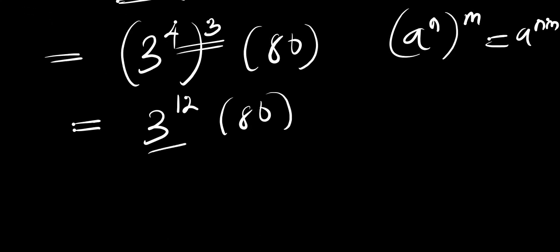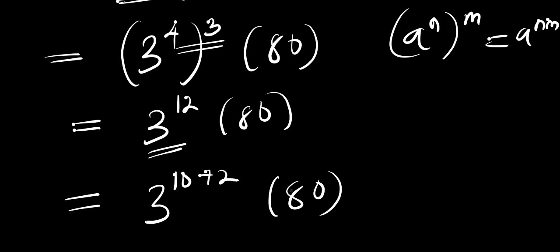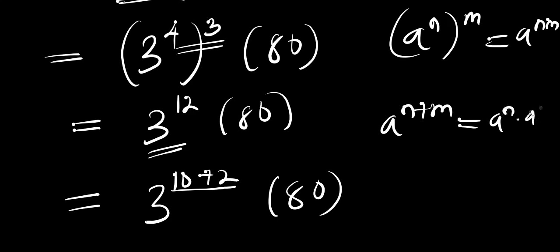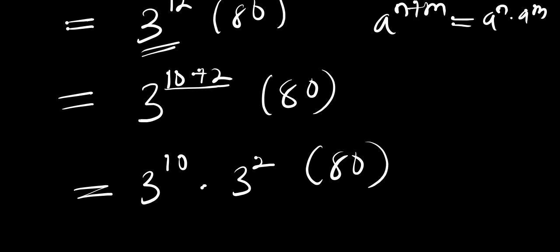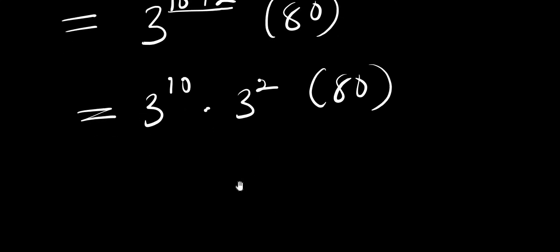To evaluate 3^12, we break it further as 3^(10+2), multiplied by 80 — since 10+2 equals 12, nothing has changed. Applying the same identity a^(n+m) = a^n × a^m, we get 3^10 times 3^2 times 80.